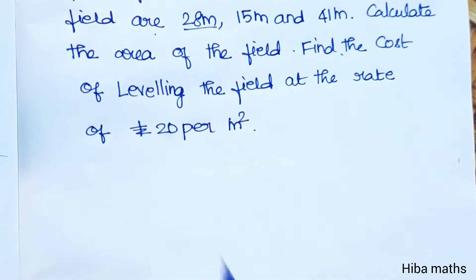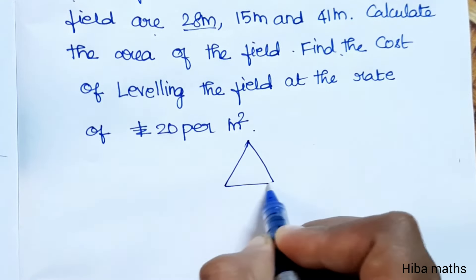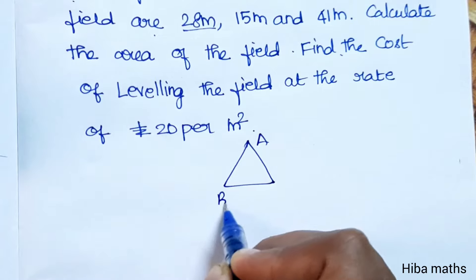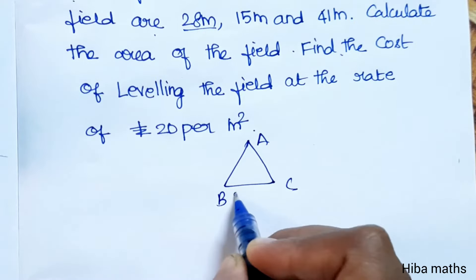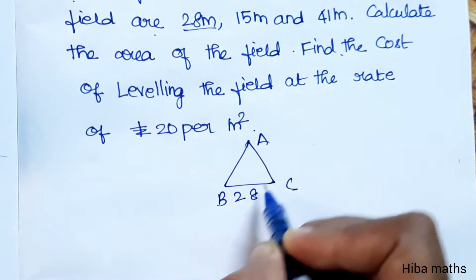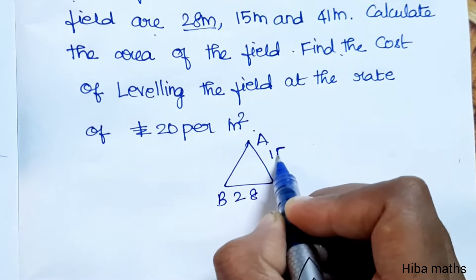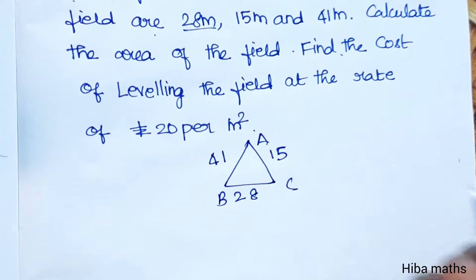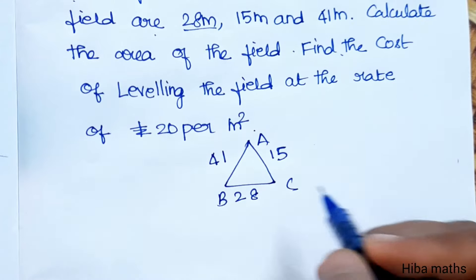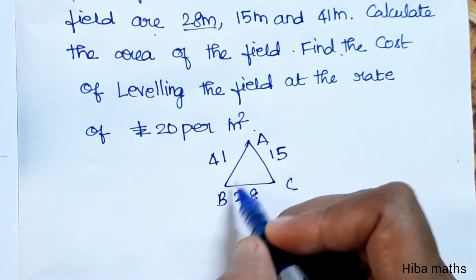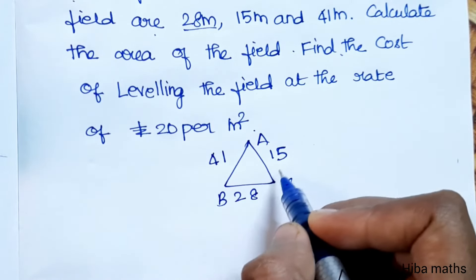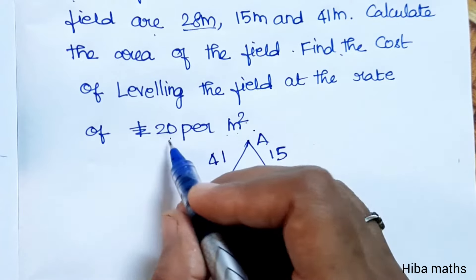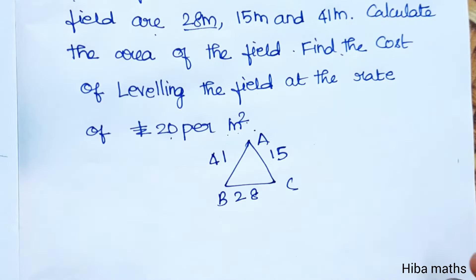So, we are talking about a triangular field. We have sides a, b, c — one side is 28, one side is 15, one side is 41. The cost of leveling is rupees 20 per meter square.